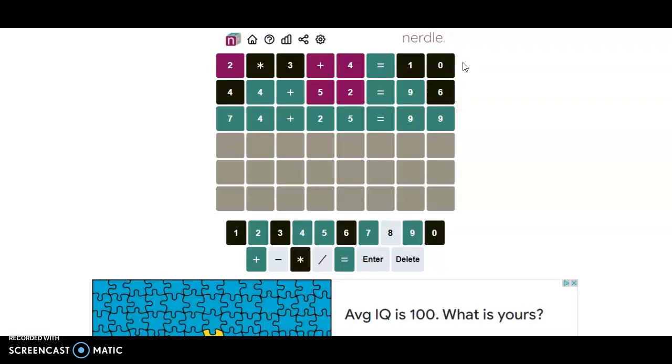That was extremely quick. 74 plus 25 equals 99. Huh, the number right before 100.